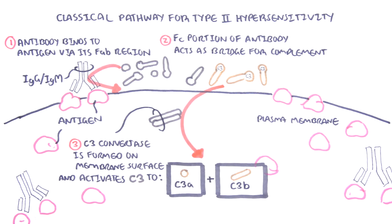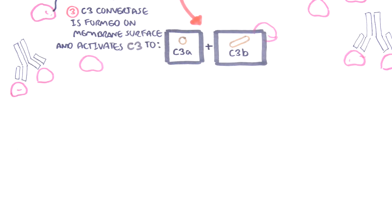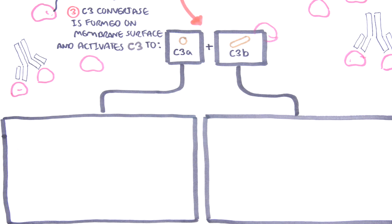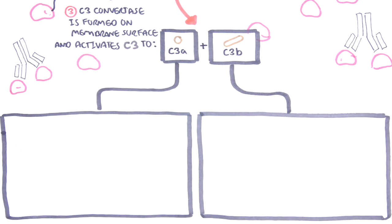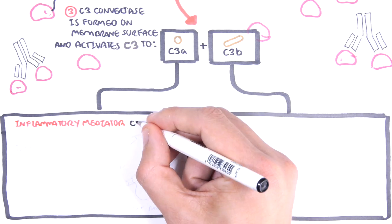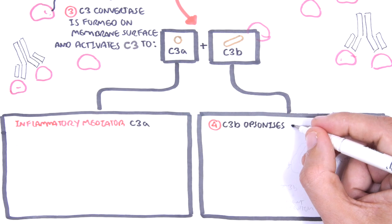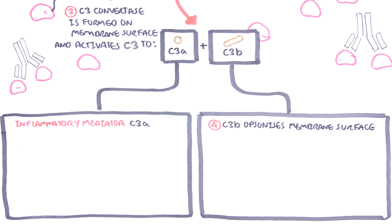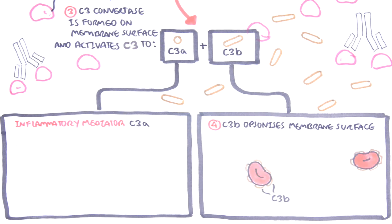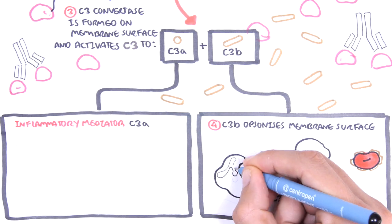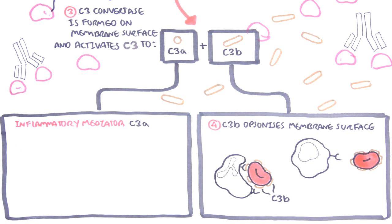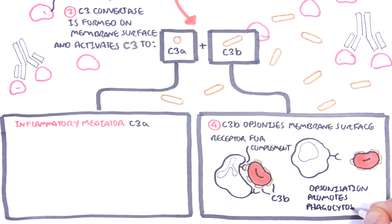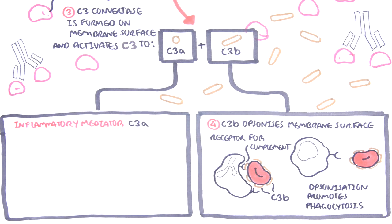C3A and C3B are active forms of complement 3 and do separate things. C3A is an inflammatory mediator promoting the inflammatory response. C3B opsonizes the membrane surface by attaching to the surface of the cell — for example, the red blood cell. The opsonized red blood cell is recognized by phagocytes such as neutrophils and macrophages via complement receptors, causing phagocytosis and destruction of the red blood cell.